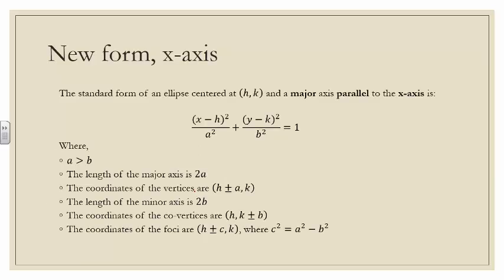The new form of the standard equation of an ellipse centered at h, k with a major axis parallel to the x-axis is: the quantity x minus h squared all over a squared, plus the quantity y minus k squared all over b squared, equals 1, where a is greater than b.